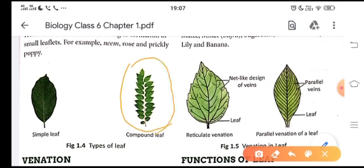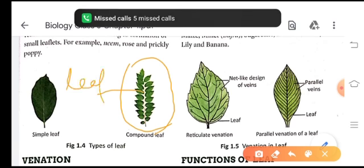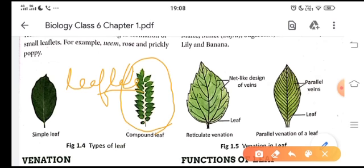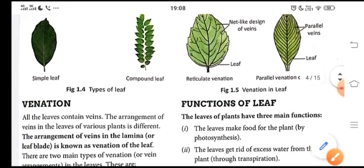Compound leaf, as you see, has small leaves around it. These small leaves are known as leaflets. These small leaves arise from the margin of the leaf blade. The leaf blade cuts and forms these small leaves and a single midrib is there. For example, rose. A common example is rose and neem leaf. In rose and neem leaf, compound leaves are present.